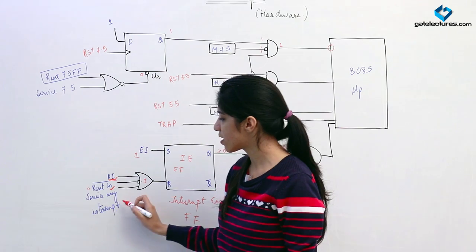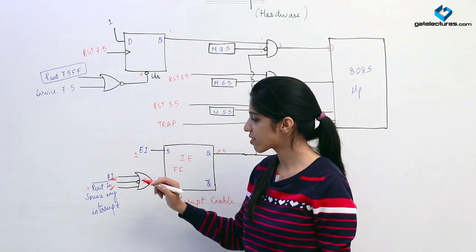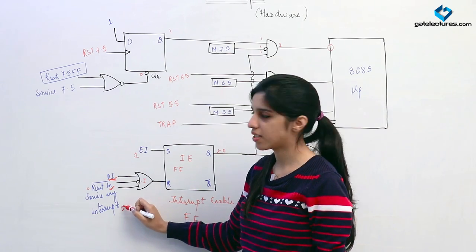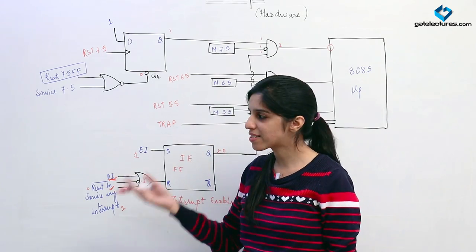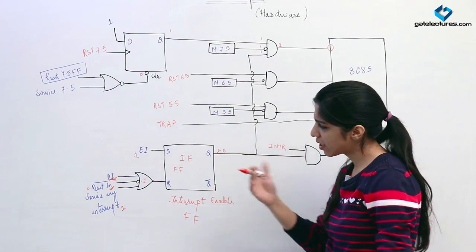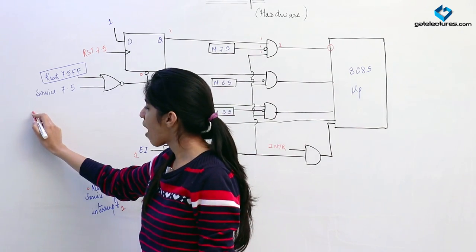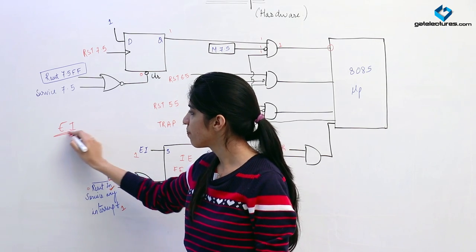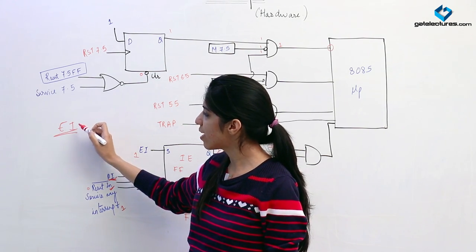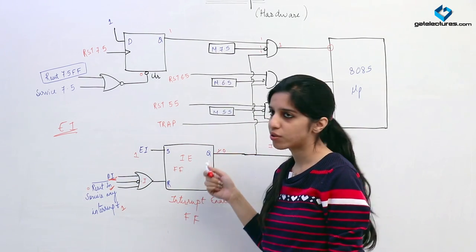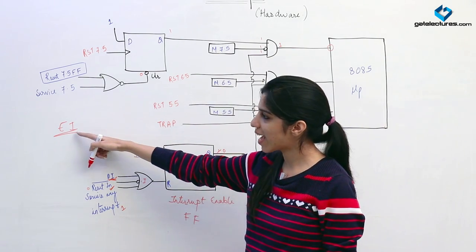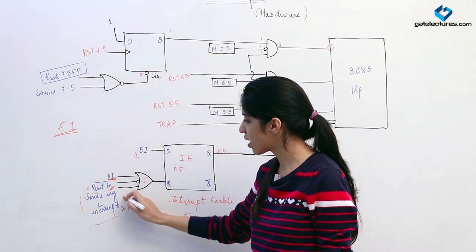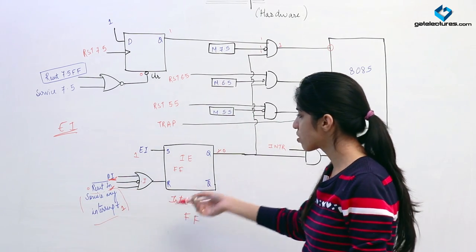There is one more option: service any interrupt. Whenever the microprocessor branches into any ISR, it will make service-any-interrupt as 1, so that while an interrupt is being serviced, the next interrupt cannot come. After the ISR ends, it is the duty of the programmer to put the EI instruction, which re-enables this flip-flop so that any other interrupt can come again. If we do not put EI at the end of the ISR, no interrupt is going to come.